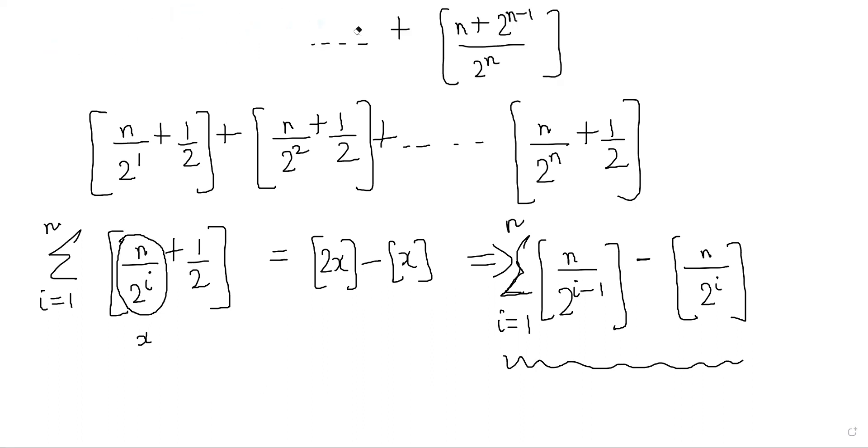When you put i equals 1, it becomes floor of n by 2 to the 0, so floor of n minus floor of n by 2. This is the first term.